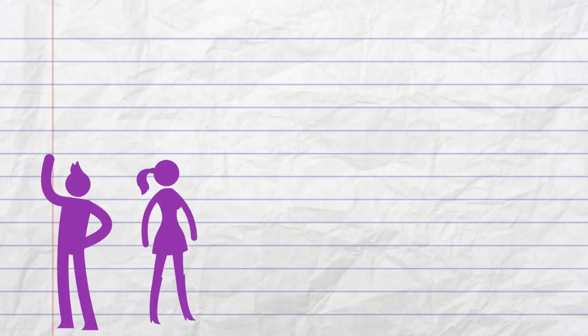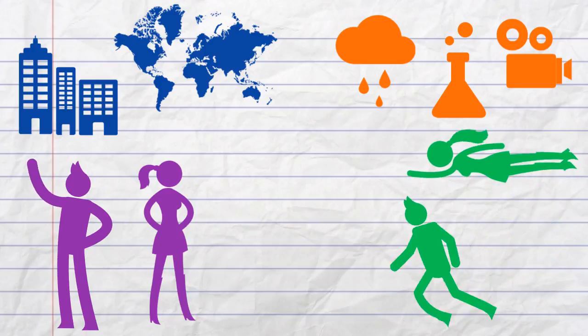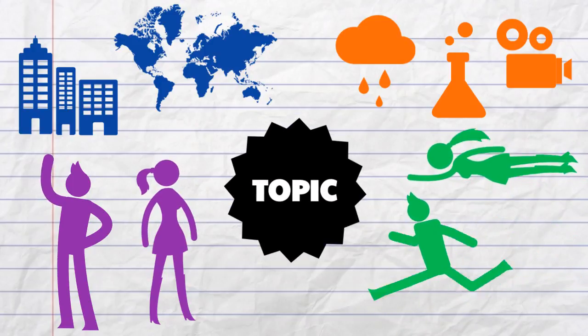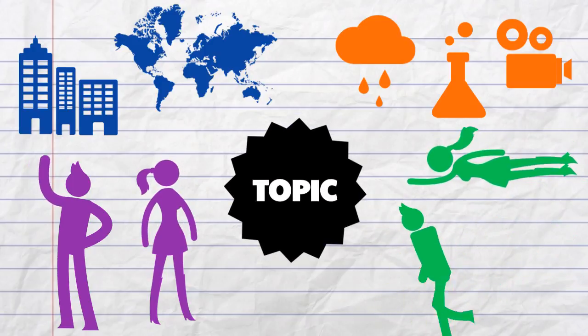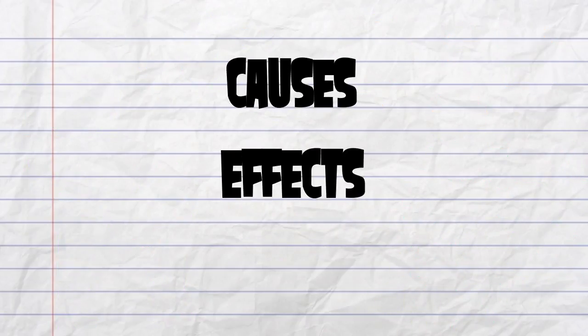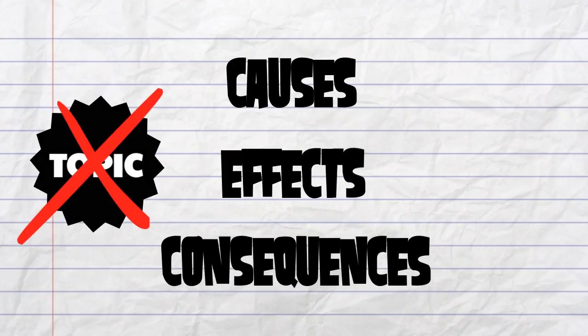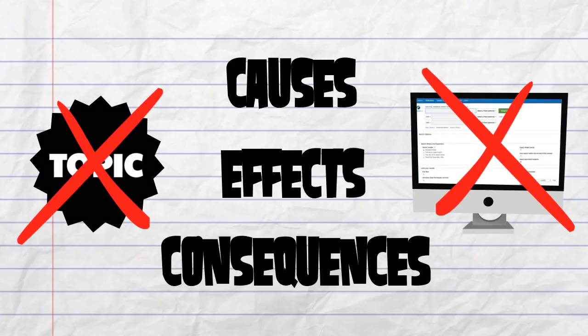Focus on the people, places, things, and actions related to your topic. Ignore words like causes, effects, and consequences, because these words are not the main subject of your research and cannot stand alone in a database search.